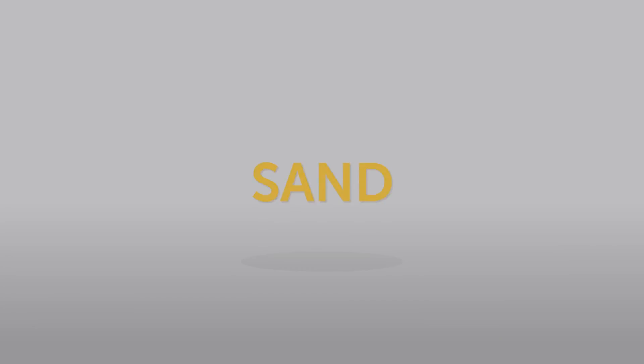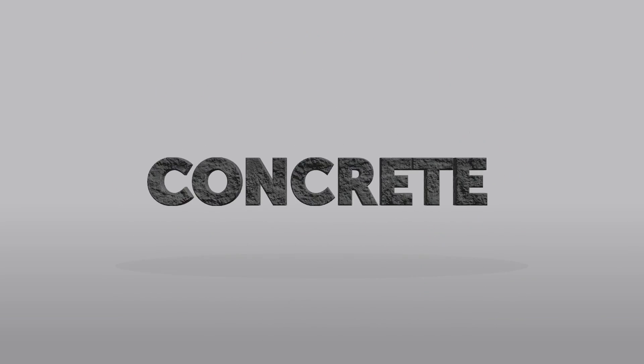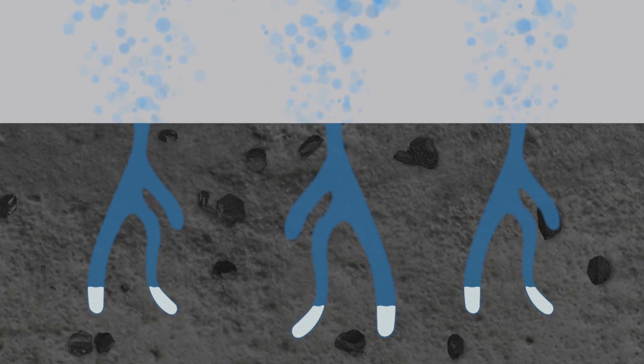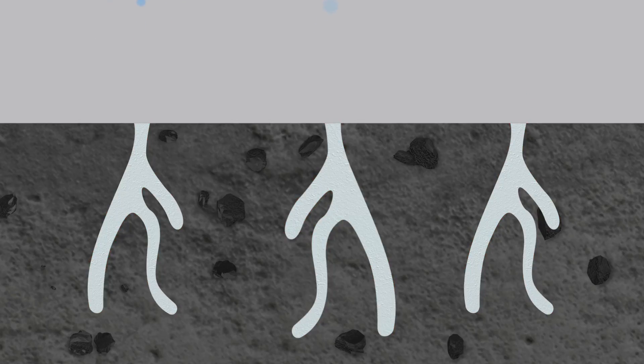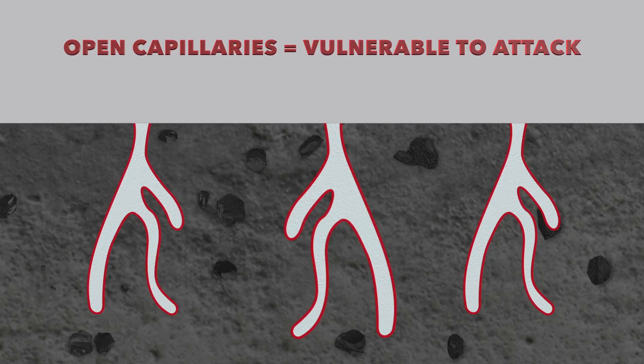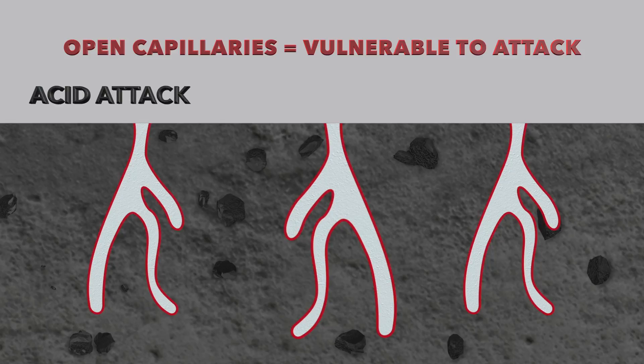Concrete is made from sand, aggregate, cement and water. When placed or cast in its mixed form, bleed water in concrete escapes into the air, creating capillaries. These microscopic arteries go deep into the concrete matrix and stay open permanently after the bleed water escapes into the air. These open capillaries instantly make concrete vulnerable and expose it to attack in many forms.